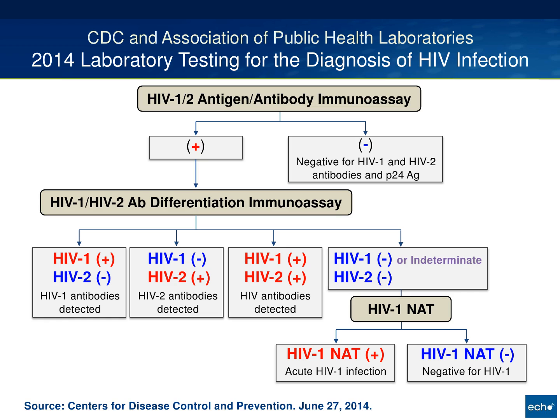Another major departure was the recommendation to use an HIV 1-2 antibody differentiation immunoassay for anyone that had a positive test. If you were positive with your initial fourth generation, you went down the pathway of getting a differentiation immunoassay, and the purpose of that assay is to tell you whether you have HIV-1 or HIV-2 or both.